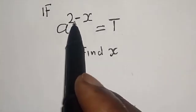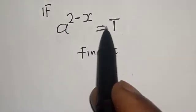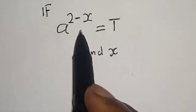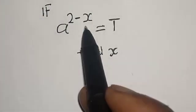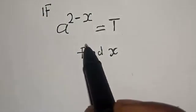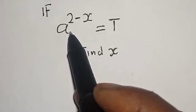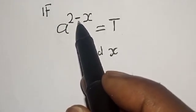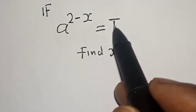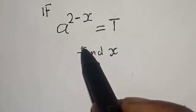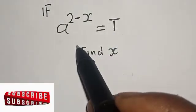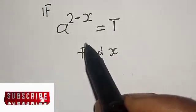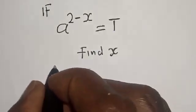If a raised to power 2 minus s is equal to t, find s. Hi everyone, welcome to my class. In this class we want to find the value of s from this given equation. Before we proceed, please don't forget to like, share, comment and subscribe. Thank you. Solution.